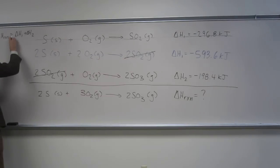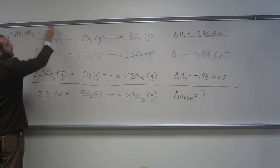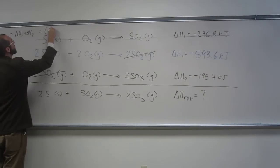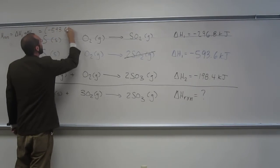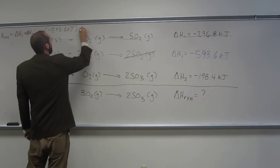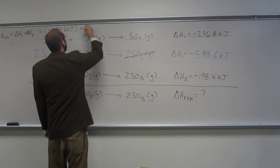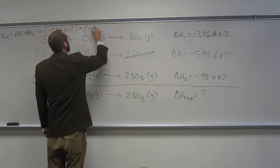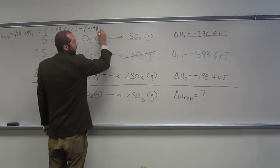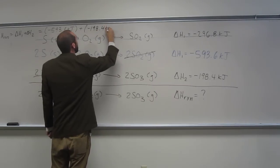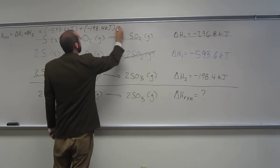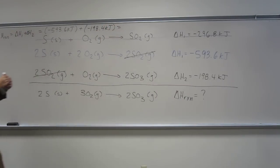Okay, let's just do it up here. ΔH1 is negative 593.6 kilojoules, plus negative 198.4 kilojoules. So that should give us the heat of reaction.